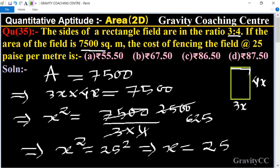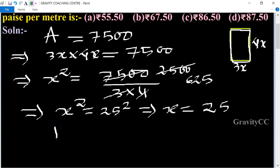The perimeter equals 2 times (length plus breadth), which is 2 times (3x plus 4x).